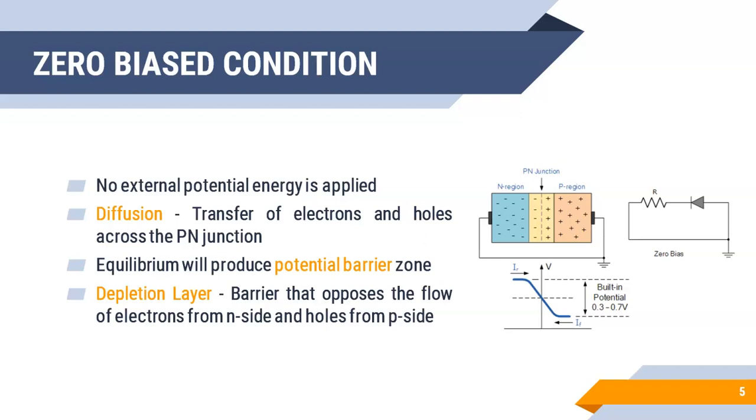For example, electrons from N-type semiconductor will try to move into P-type semiconductor. Similarly, holes from P-type semiconductor will try to move into N-type semiconductor. This process is known as diffusion. Due to this, we will also be having diffusion current in PN junction diode.